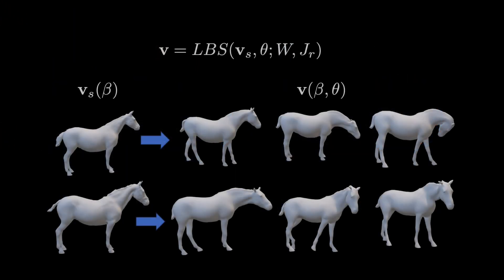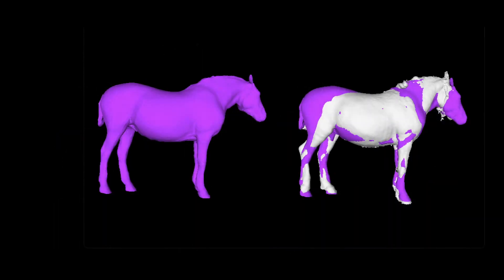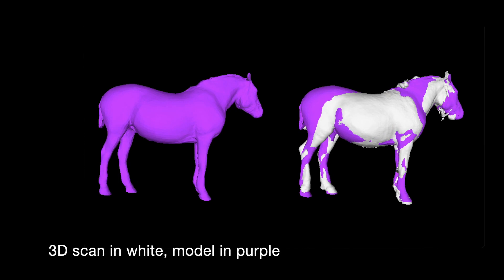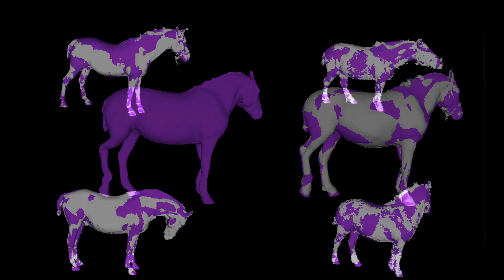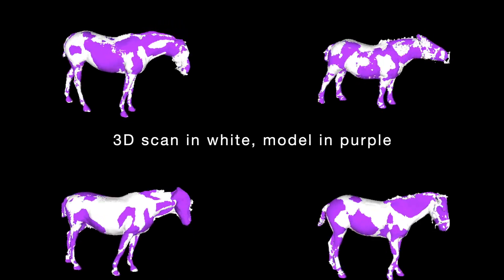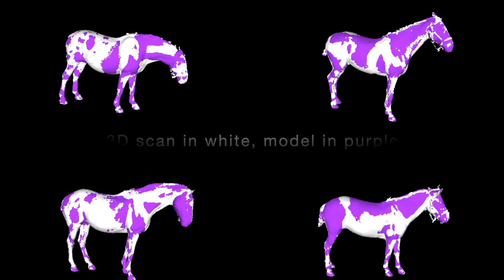Once a shape is generated, the model can be articulated with linear blend skinning, given the 3D pose parameter theta. In the second phase, we exploit the shape model to register the dynamic scans. This registration phase is mostly unsupervised. We register the model to the 3D scans, obtaining a dataset of about 3,600 scan and model pairs that we use to train the muscle model.